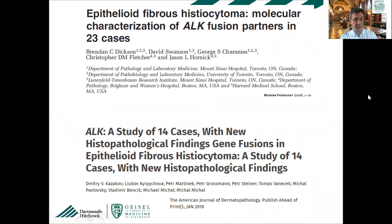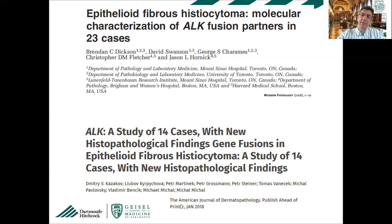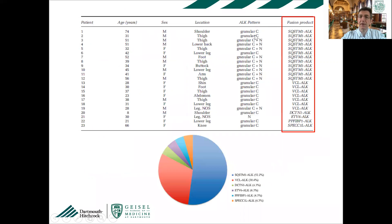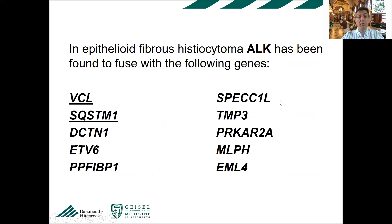Epithelioid fibrous histiocytoma has ALK rearrangements. Studies using next-generation sequencing discovered that the most common fusion partners are SQSTM1 and VCL, though many other partners have been described. The most common are VCL and SQSTM1, but the variety of partners doesn't really matter clinically — they all stain for ALK and show ALK rearrangement by FISH.